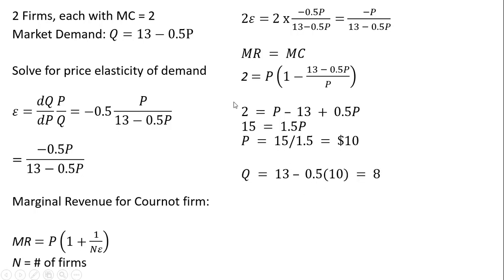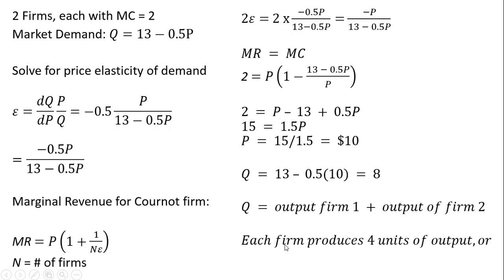Plugging that $10 into our market demand, the total quantity demanded in the market at a price of $10 is 8. And since we have two firms, each with the same marginal cost, this output will just be split evenly between these two firms. So each firm will produce 4 units of output, just 8 divided by 2.